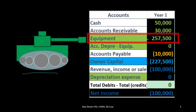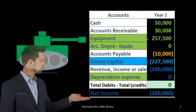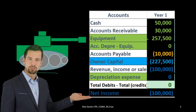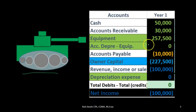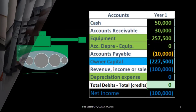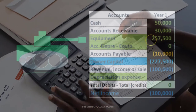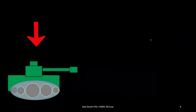We call it depreciation because we don't have fewer tanks later on — we still have the one tank, but its value has gone down. We tell our reader here is the price of the tank and here is what we believe it's gone down in value, or the allocation of that cost. Book value is the cost less the accumulated depreciation.